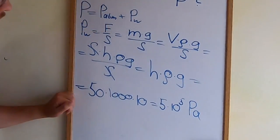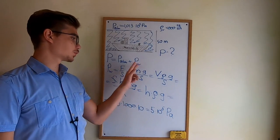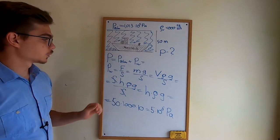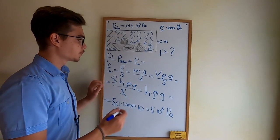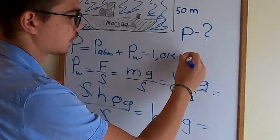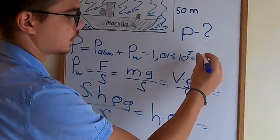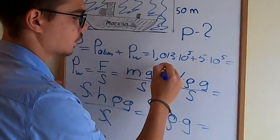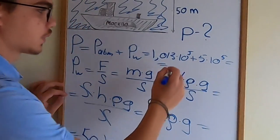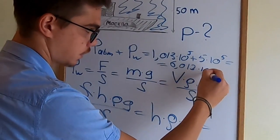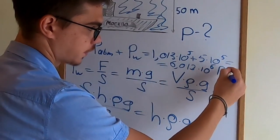Right, okay. But this is only the pressure of the water. We also want to add the atmospheric pressure. So the whole pressure acting on the ship will be equal to atmospheric pressure plus the pressure of the water, which will give us 6.013 times 10 to the 5 pascals.